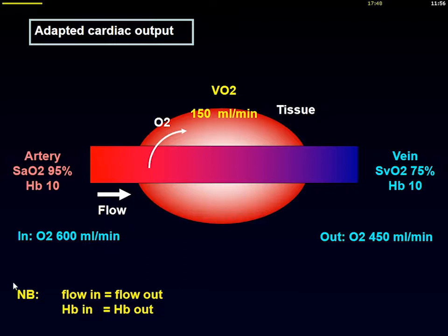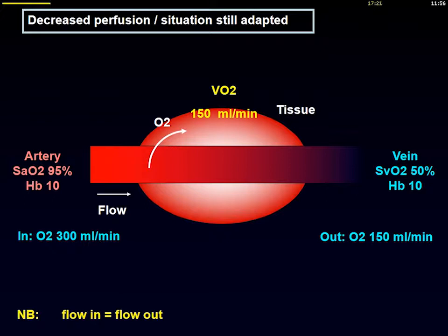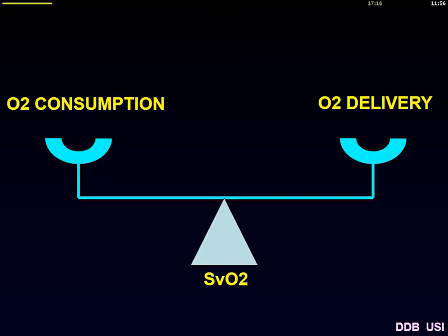The usual SvO2 is about 75%. If we have a decrease in perfusion but the situation is still adapted — meaning we are not yet in circulatory failure — then we have less oxygen entering this piece of tissue, the same amount consumed, and by definition the amount of oxygen leaving is decreased. So SvO2 represents the balance between oxygen consumption and oxygen delivery to the tissues.